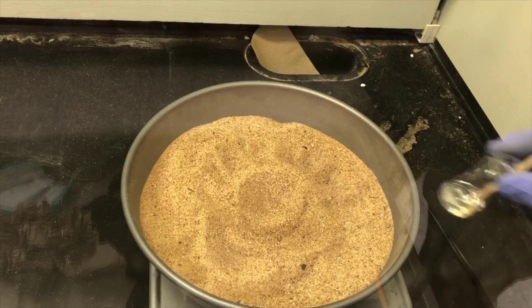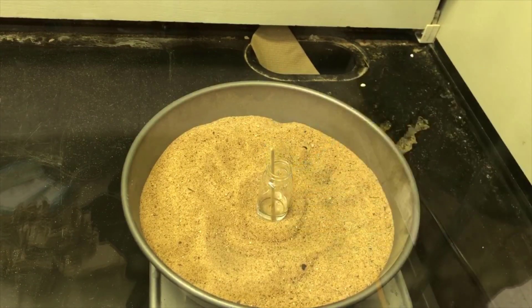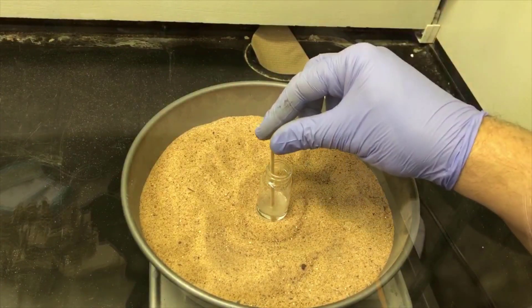Now I'm evaporating the ether in a sand bath. Notice how I have a stick inside this vial. The stick provides a surface for the bubbles to form on and help smooth out the boiling. You'll notice here in a minute, when I take the stick out, the boiling seems to stop.